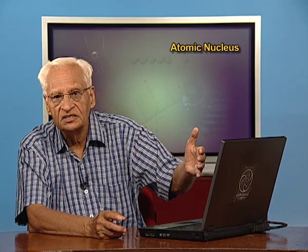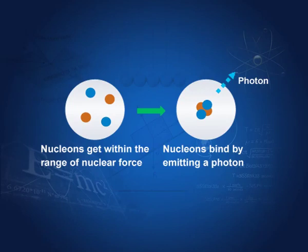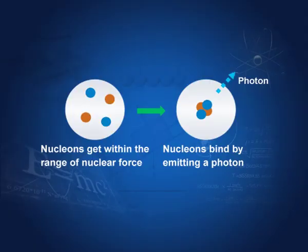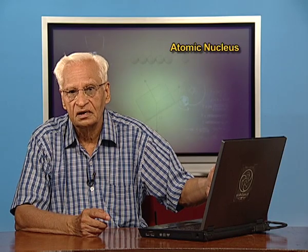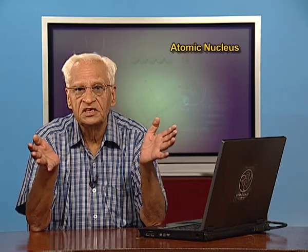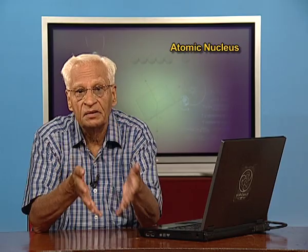When the nucleons bind together, they lose some energy, which means they lose some mass according to Einstein's equation. Therefore, the mass of the nucleus is slightly smaller than the combined mass of the nucleons, and this difference is known as the mass defect. The larger the mass defect, the more solidly are the nucleons bound together and therefore the more stable the nucleus. The mass defect of a nucleus A, Z is defined as delta m = A·u minus the measured mass of the nucleus.